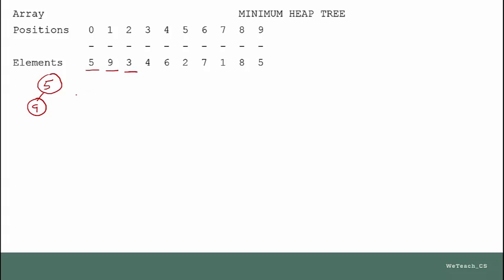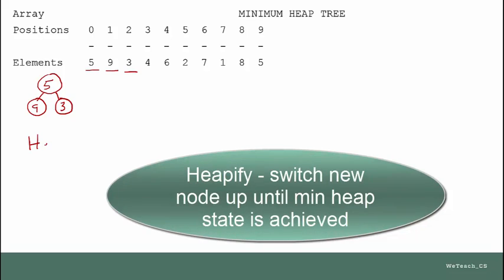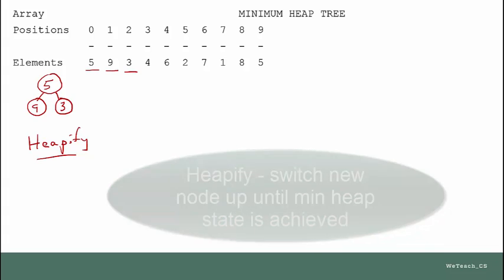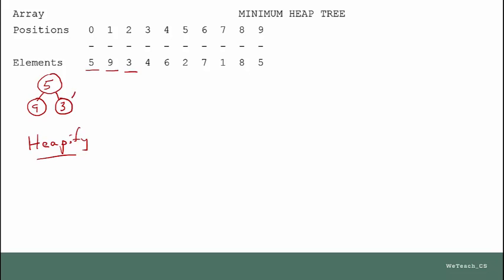Now let's add the 3. The 3 is going to go here, and it's obvious that the parent is not less than its new child. So we need to do what's called a heapify process — this is one in which we make adjustments so that we maintain the minimum heap state. This process simply means we're going to switch places. The 3 is now the root node, the 9 remains unchanged, and the 5 takes the place of the 3. Now we're back in min heap state.